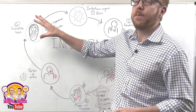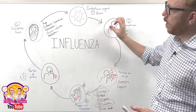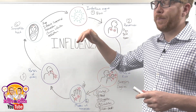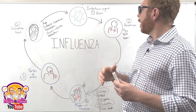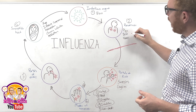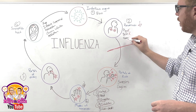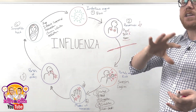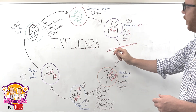Now that we've covered the six steps, we can think about how to break the chain at particular points to stop the spread of the virus and control the outbreak. At the reservoir level, we can try to contain it. In the case of swine flu and bird flu, many animals were culled to reduce the reservoir. For humans, we can use isolation — when a person is thought to be infectious, they isolate to stop bringing the disease into a new population.